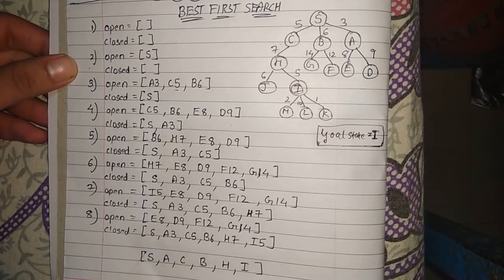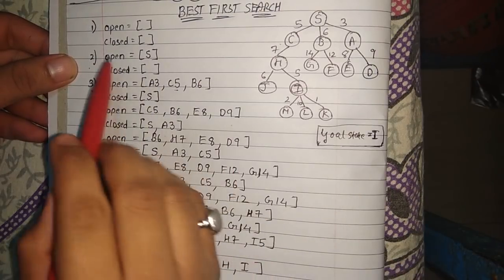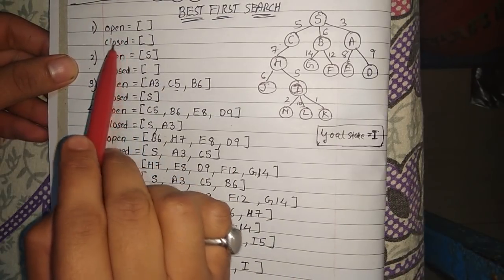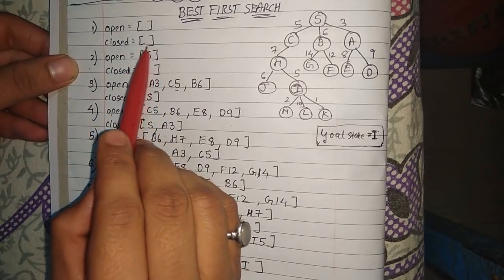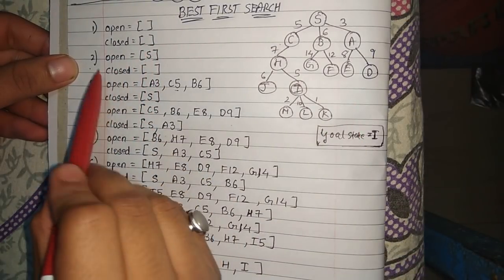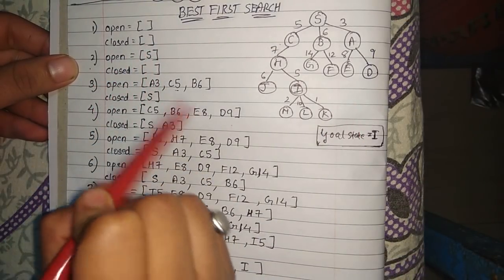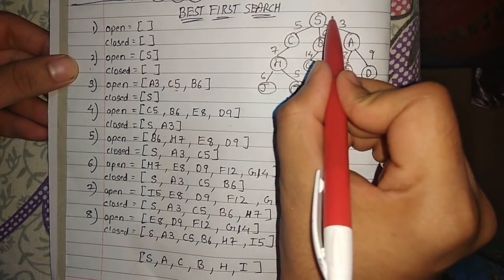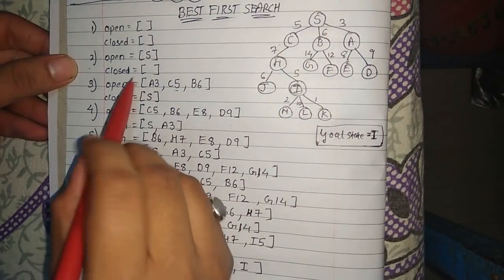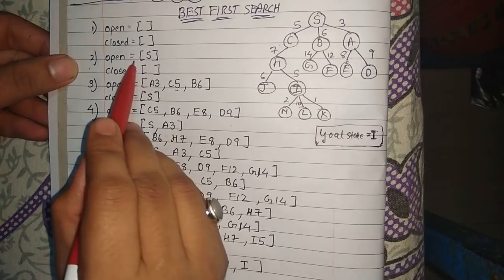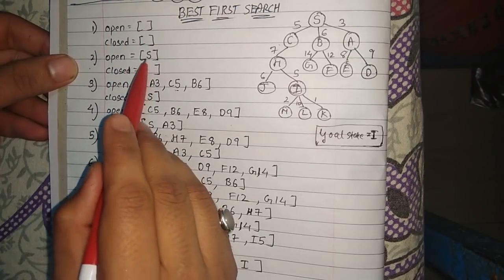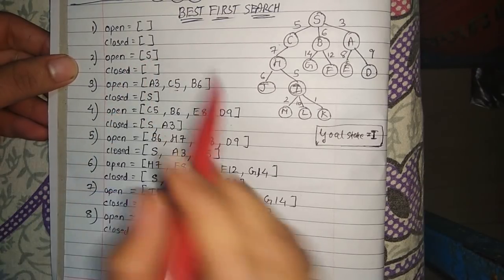Initially, we will take two arrays: an open array and a closed array. Both are initially empty. The next step is we start with the root node, which is S. We put S into the open array and check whether S is the goal state or not.